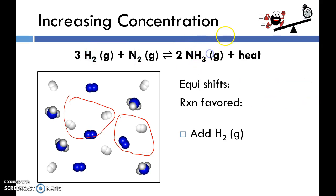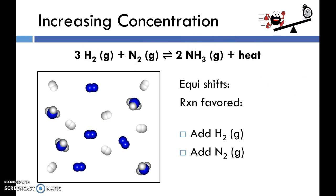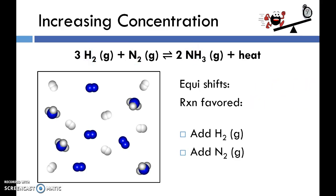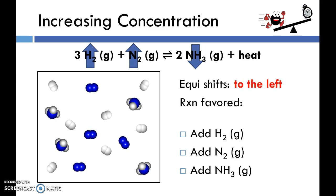If we add more N2 gas, collisions between nitrogen and hydrogen will most likely increase, causing the concentration of reactants to decrease and the concentration of the product to increase. Equilibrium still shifts to the right and the forward reaction is favored. Now if we add more NH3, collisions between NH3 molecules become more likely, so we see a decrease in ammonia concentration and increases in H2 and N2. Equilibrium shifts to the left and the reverse reaction is favored.